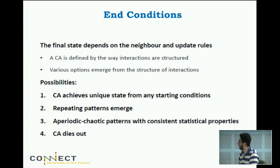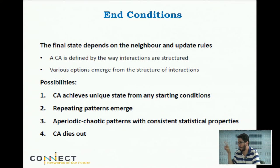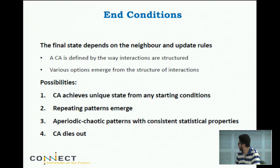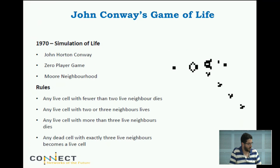Chaotic does not mean random - it means sensitively dependent on initial conditions. Even if you can't predict beyond some time horizon, you can still do statistical analysis. Some chaotic systems are deterministic with a known equation. The CA might also simply die out. A unique state might be what you want if you're aiming for a regular frequency reuse pattern. Repeating patterns can be unwelcome - like ping-pong effects where users keep being associated to different cells or power keeps oscillating. CA dying out could happen with a rule like 'use maximum power,' causing total interference.